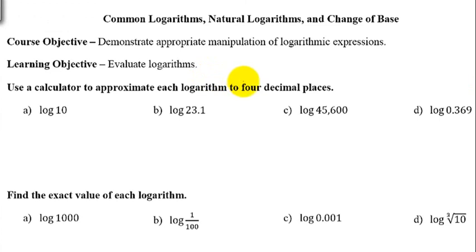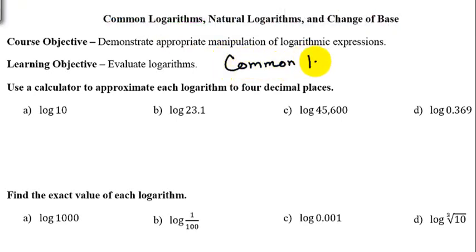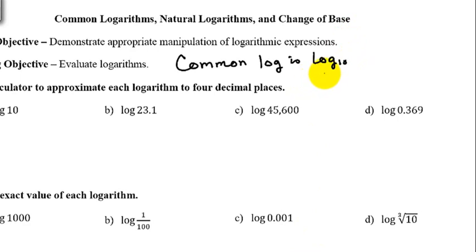This video is on common logarithms, natural logarithms, and change of base. The first thing we're going to talk about is computing some common logs on your calculators. A common log is a log base 10. There are two special logs: the common log with a base of 10, and the natural log with a base of e. When people write log base 10 they just write LOG with no base, so anytime you see just LOG it means base 10.